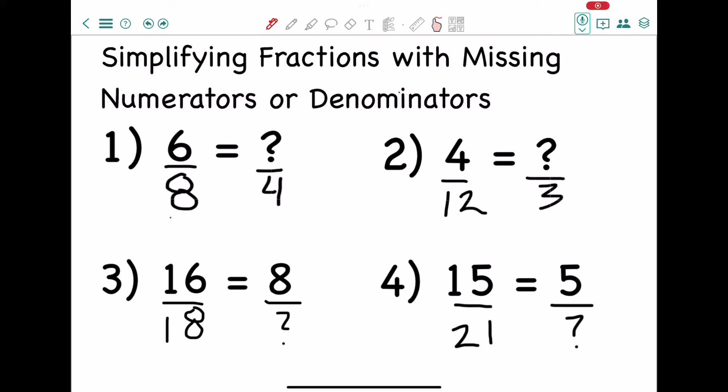So how do you get from 8 to 4? 8 divided by what is 4? 8 divided by 2 equals 4. So now we have to divide the numerator by 2. So 6 divided by 2 is 3. And here the fraction is 3 over 4. Nothing more can be simplified from this fraction so this is our final answer.